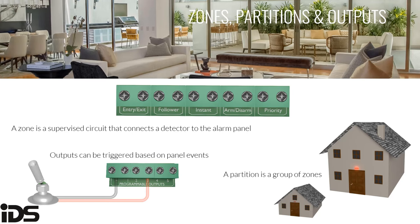A partition is a group of zones that may be controlled independently from any other group. Partitions have their own separate settings, allowing them to act completely independently. For example, you could have your house as partition one and your perimeter as partition two. In a business, each department can have its own partition armed and disarmed independently based on its staff. When programming, global settings affect the whole panel, while partition settings only affect the partition being programmed — so you can have different siren durations or user access per partition.